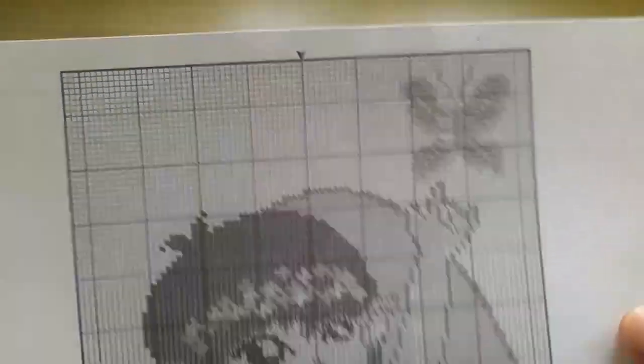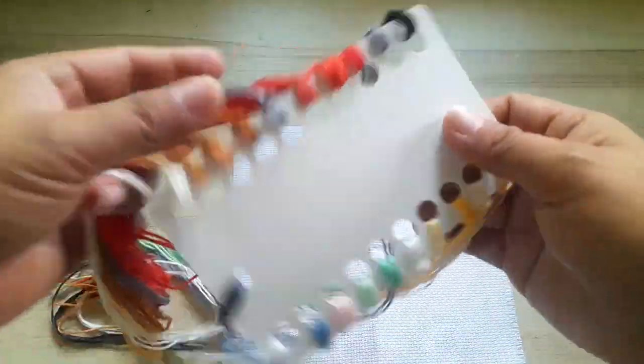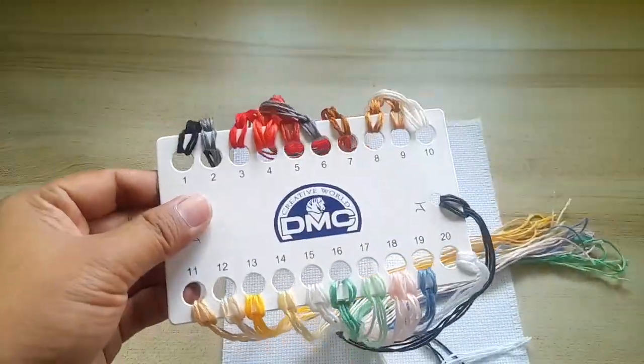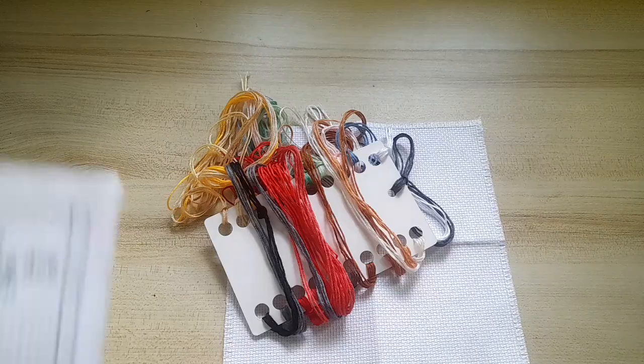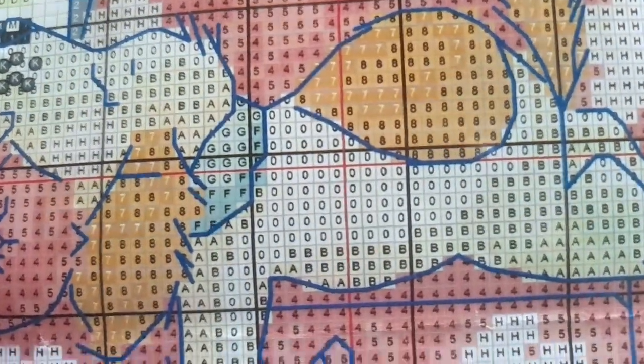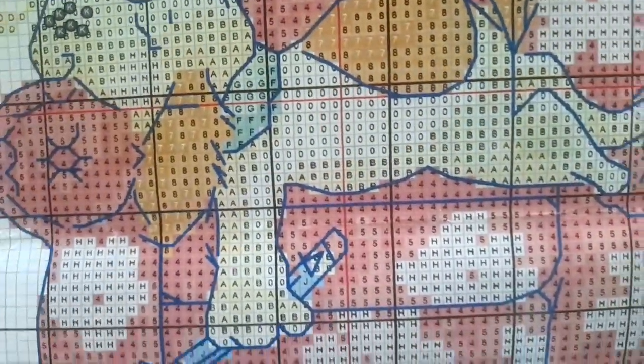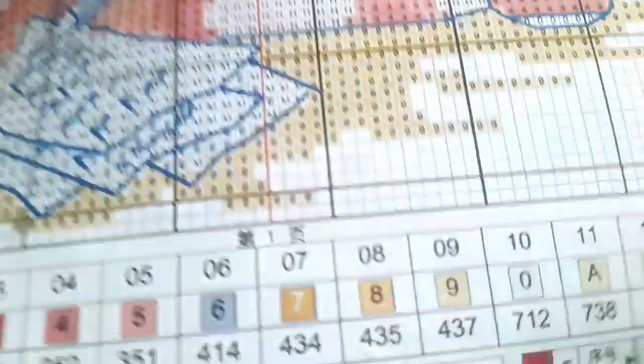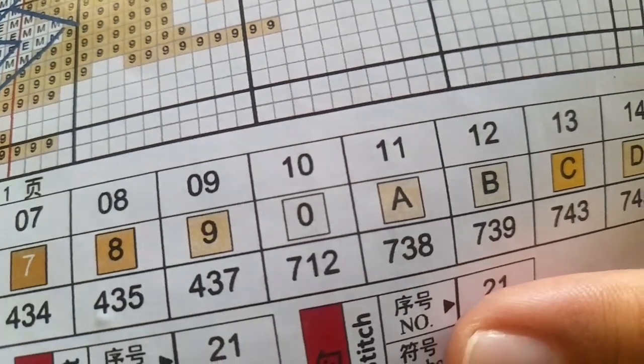That indicates where the center is. Now grab the thread which the pattern indicates to be used. All of my materials or threads are going to be DMC products. I always use the DMC and look what thread should be used to go first.